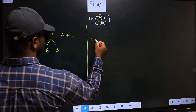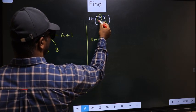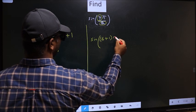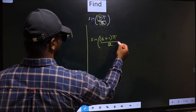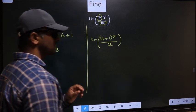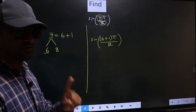So this will change to sine, in place of 7. Now you should write (6 + 1)π/2. This is your step 1.